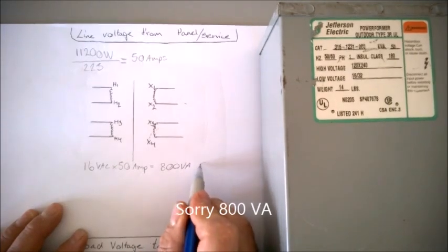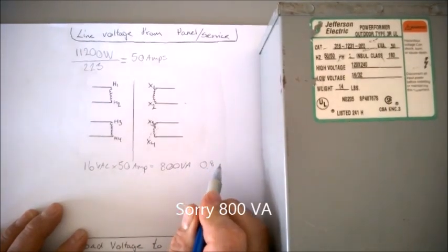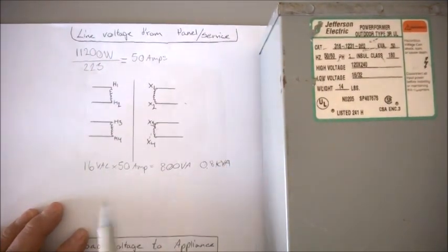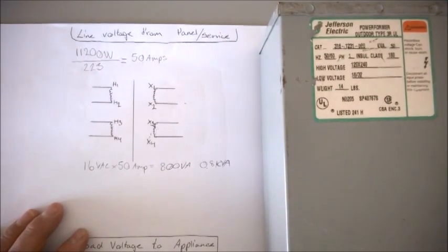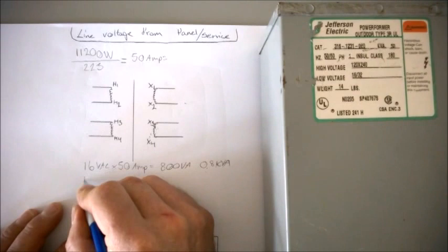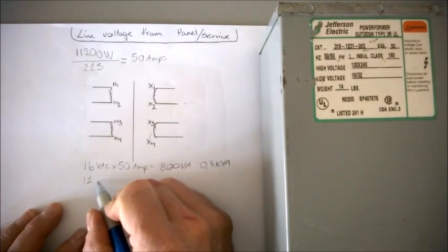That's equal to 0.8 KVA, because kilo means 1000. So for a 50 amp load and we want to boost with 16 volts or buck with 16 volts, you need a 1.0 KVA buck booster. Let's see here what happens. Let's say it was a 12/24 booster and we only wanted to boost or buck with 12 volts.